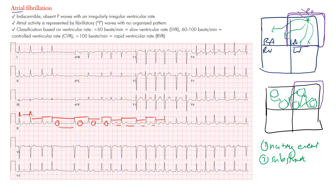We call that an irregularly irregular rhythm, and atrial fibrillation is the most common irregularly irregular rhythm. Causes include congenital heart disease, cardiomyopathy, any form of toxicity, rheumatic heart disease affecting the mitral valve, a familial form, drugs, inhalants, and ischemia. If you see atrial activity, you tend to see small fibrillatory F-waves with no organized pattern. Here we don't see much of it — maybe slightly in lead three — and it almost looks isoelectric.